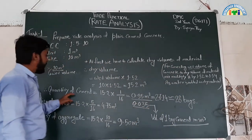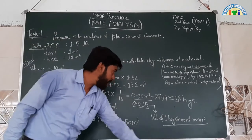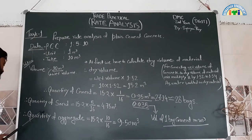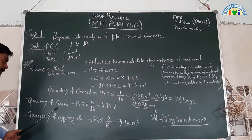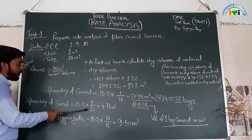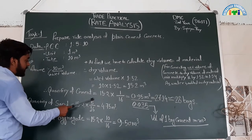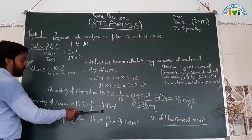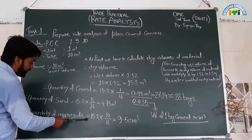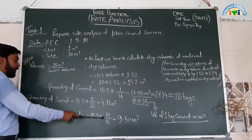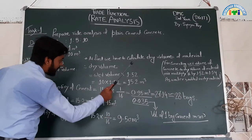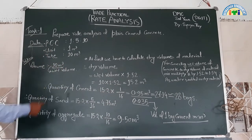Next, quantity of sand is the same: dry volume times ratio divided by sum of ratio, which equals 4.73 cubic meters. Quantity of aggregate is dry volume times ratio divided by sum of ratio, which equals 9.50 cubic meters.